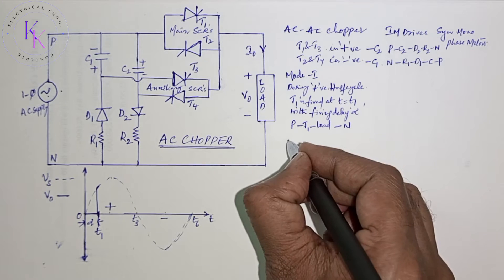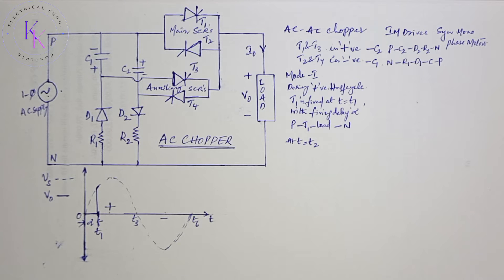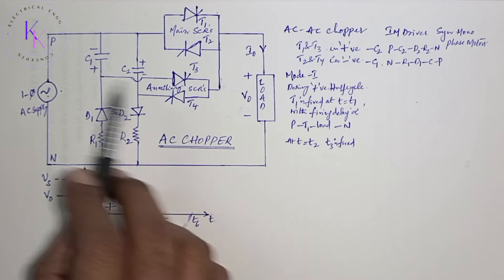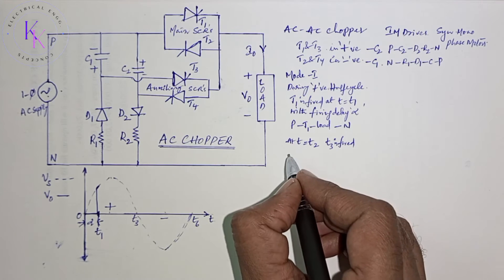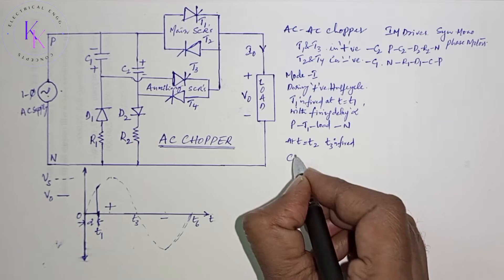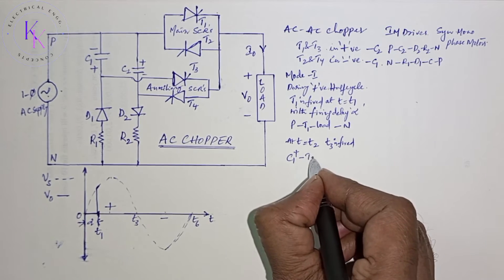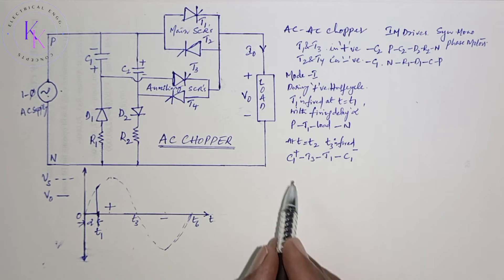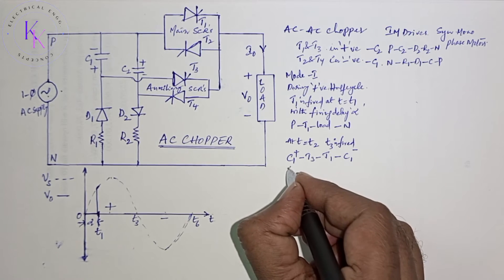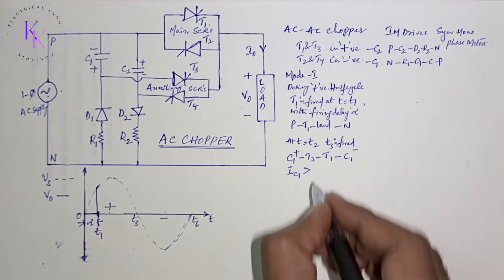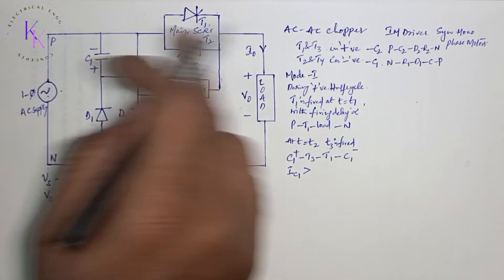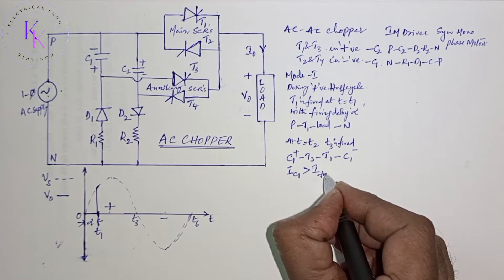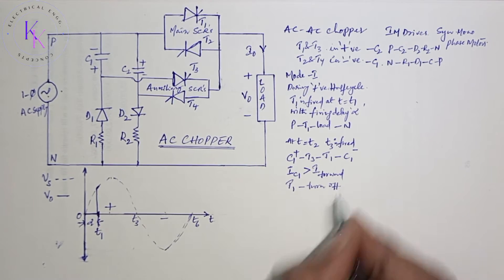At T equals to T2 in positive half cycle itself, T3 is fired. When T3 is fired, C1 discharges through T3 - that is C1 positive goes to T3 to T1 to C1 negative. When this discharging current due to C1 is greater than the forward current or load current given by the supply, T1 will turn off at T2.